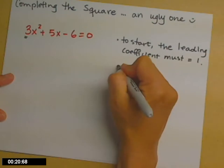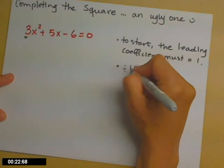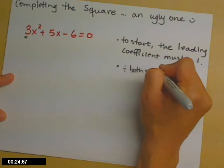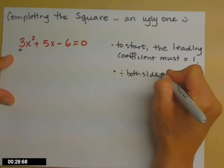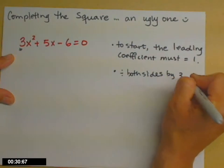So to make that be a 1, what we're going to do is divide both sides by whatever the leading coefficient currently is. So for us, that's going to be 3. Divide both sides by 3.